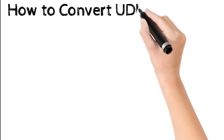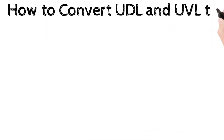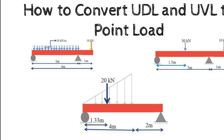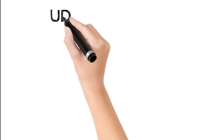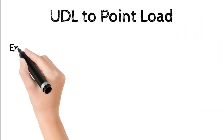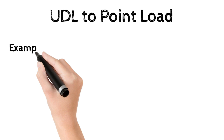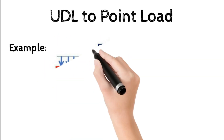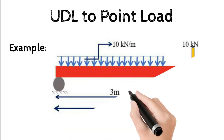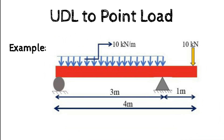In this video, let us see how to convert UDL and UVL to point load. First, UDL to point load. In a given beam, a load intensity of 10 kilonewton acts at a definite point, and another load of 10 kilonewton per meter is uniformly distributed over a span length of 3 meters.